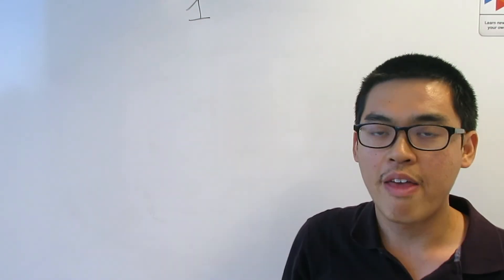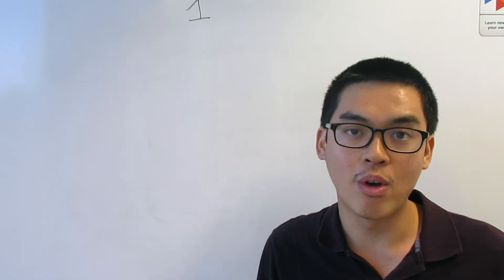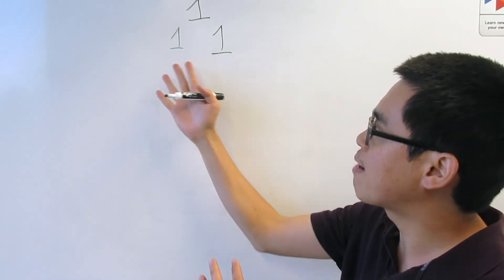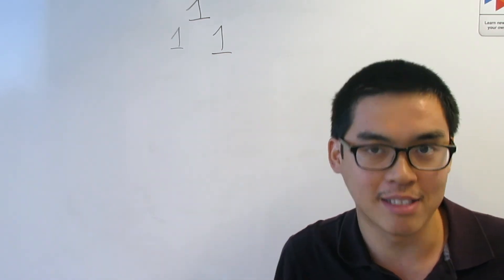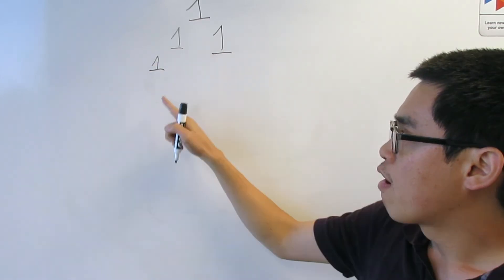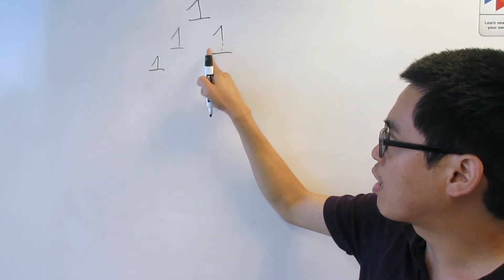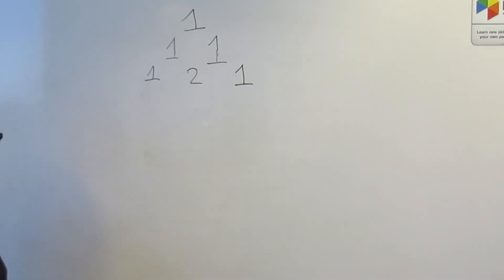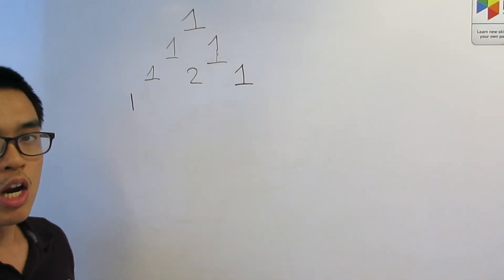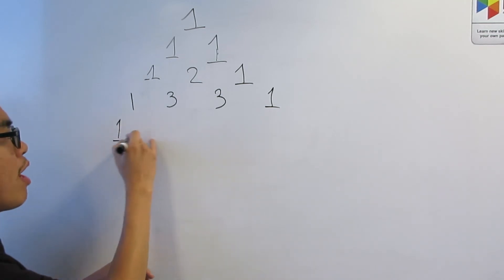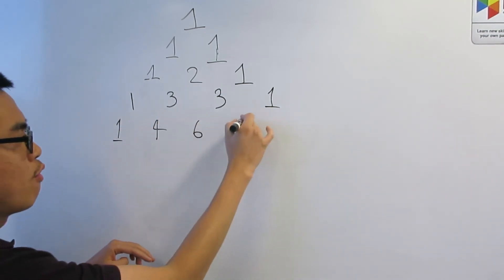I want to finish with something directly related to N choose K: Pascal's Triangle. You start with 1 in the first row, the next row is a pair of 1s, forming an equilateral triangle shape. So we have 1, 1. The next row has 3 numbers — we always start and end with 1, and the middle number is the sum of the two numbers diagonally above it: 1 plus 1 equals 2. Continuing: 1, 3, 3, 1; then 1, 4, 6, 4, 1.